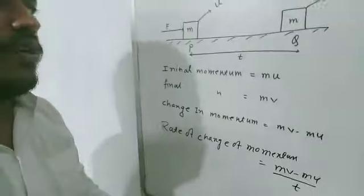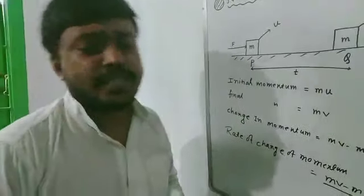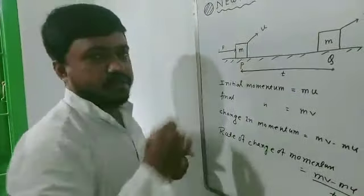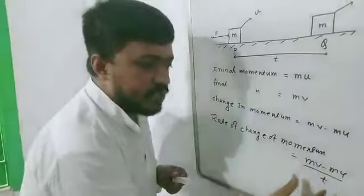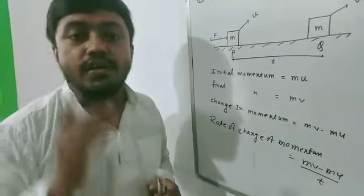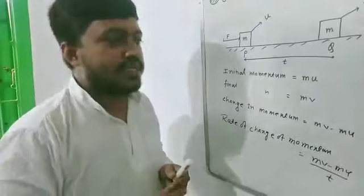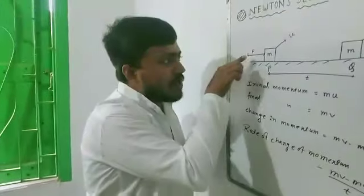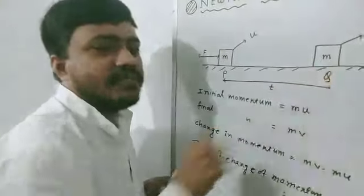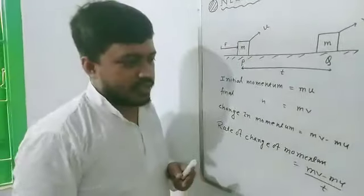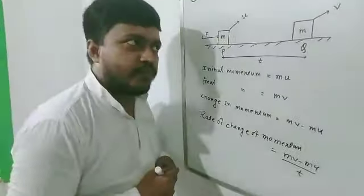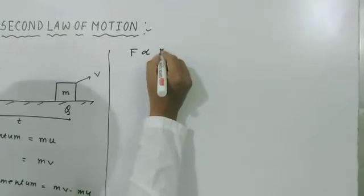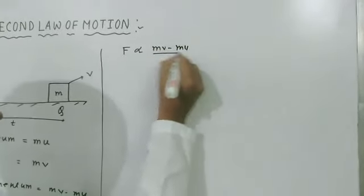Why does this happen? Why does the rate of change of momentum occur? It is due to only one parameter — the applied force. So that means the rate of change of momentum is directly proportional to the applied force. And one important thing: the rate of change of momentum takes place in the direction of the applied force, because you are applying the force in that direction and the change in momentum also takes place in the same direction. So finally, F is proportional to (Mv − Mu) / T.